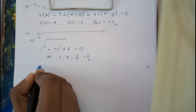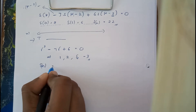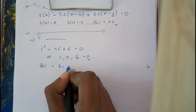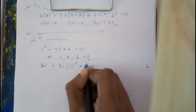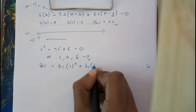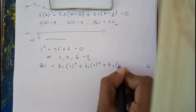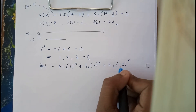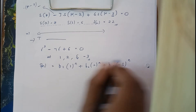Now finding the homogeneous solution: s(n) = b1·(1)^n + b2·(2)^n + b3·(−3)^n. I hope everyone is clear with this form.